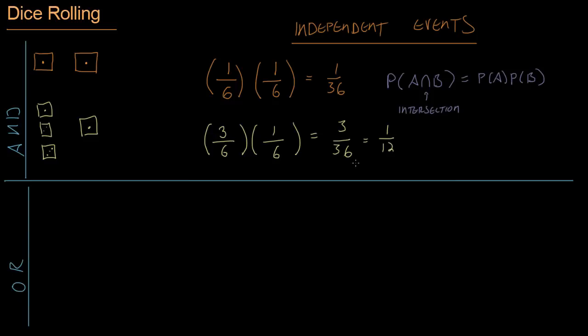But now we are going to look at or events. So we're going to figure out what is the probability of this die rolling a one, or the second die rolling a one. So they don't have to both roll a one, as long as only one of the two rolls a one, then we're gravy.